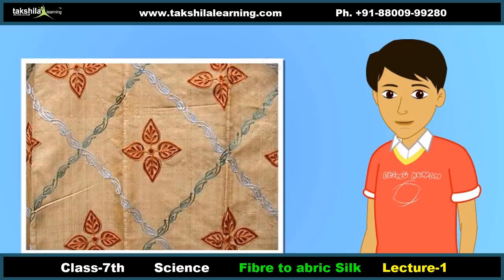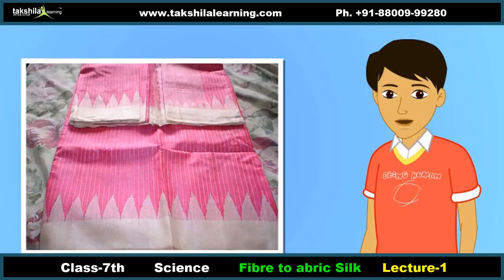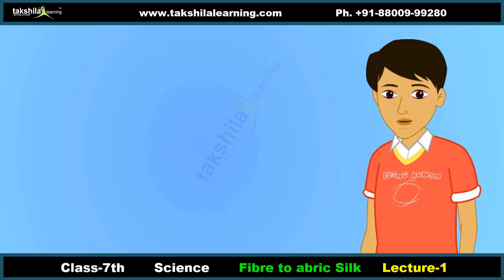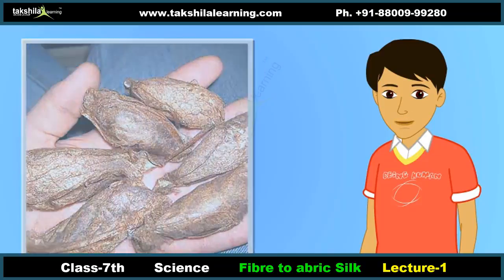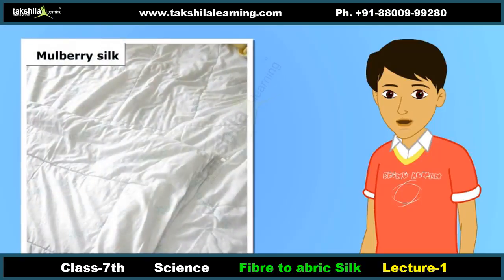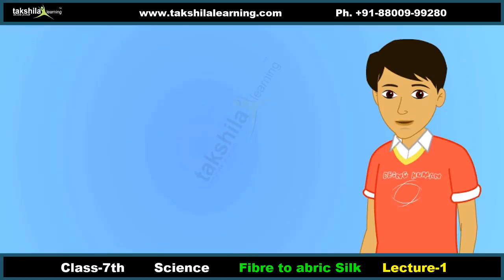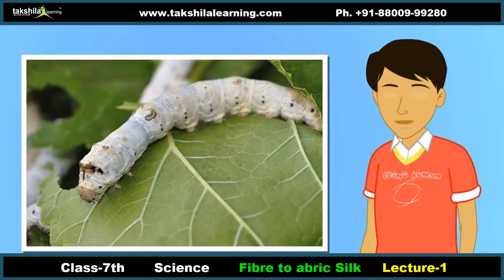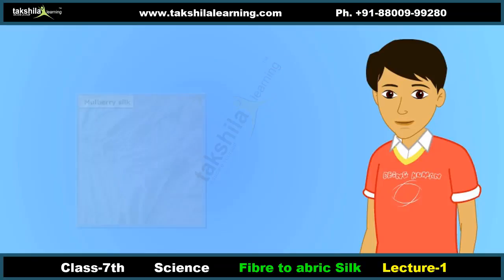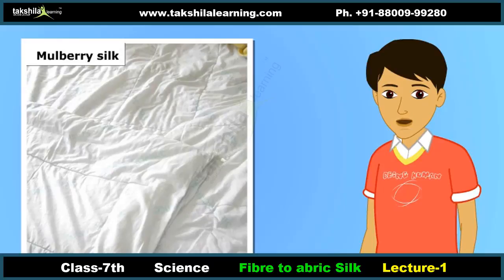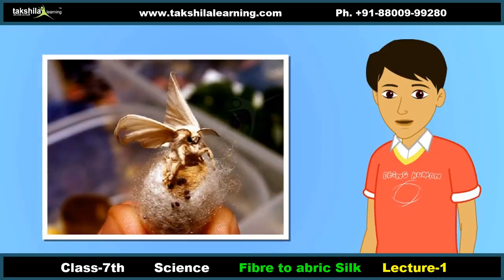Tassar silk, Moonga silk, and Kosar silk are different varieties of silk. These silks are obtained from the cocoons spun by different types of moths. Mulberry silk is the most popular of all categories of silk and is produced by the mulberry silk moth that completely feeds on the leaves of the mulberry plant. These moths are bred indoors and completely domesticated. Most of the commercial silk is mulberry silk.